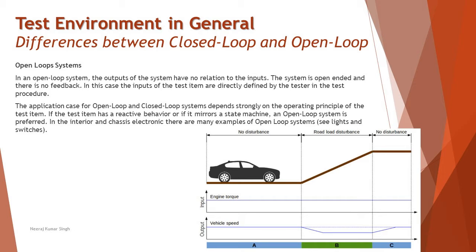There is an example here taken from the automotive industry. This is an open loop control system of a vehicle going on the road. The input is the engine torque, the system is the vehicle itself, and the output is the vehicle speed. The driver adjusts the engine torque by pressing the accelerator pedal. However, the road has an inclination which acts as a disturbance. In zone A, for a given position of the accelerator pedal, the engine generates a certain amount of torque applied to the wheels. If the road is straight with no gradient, the vehicle speed will stabilize at a constant value.